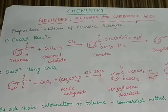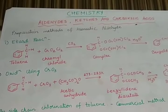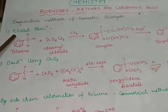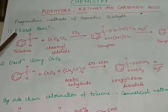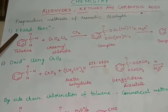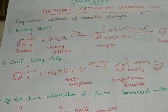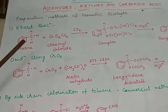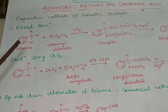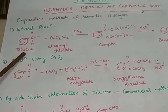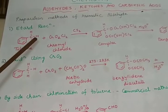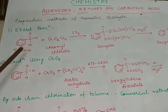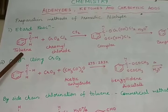The first method is the Etard reaction, named after the scientist Etard. When we want to prepare an aromatic aldehyde we will start with a compound which is aromatic in nature. The starting compound used here is toluene, which is nothing but methyl benzene — benzene with a CH3 group.